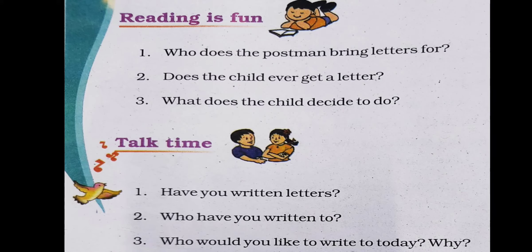Now, next exercise — Talk Time. Here you need to discuss. Question 1: Have you written a letter? You are being asked — have you ever written a letter? If not, as I mentioned, your friends are all in lockdown — you can write letters to stay in touch. Question 2: Who have you written to? If you have ever written a letter, you need to tell — to your grandparents, uncle, auntie, friends — whom have you written to? Tell your parents.